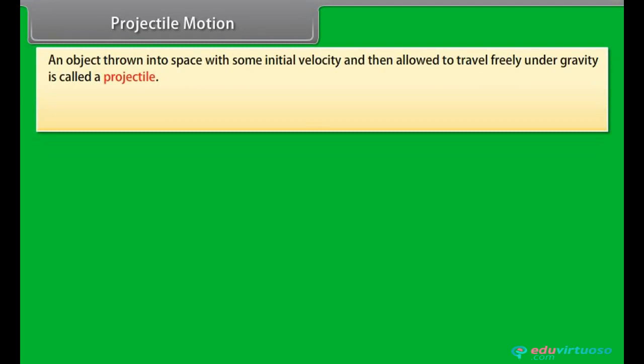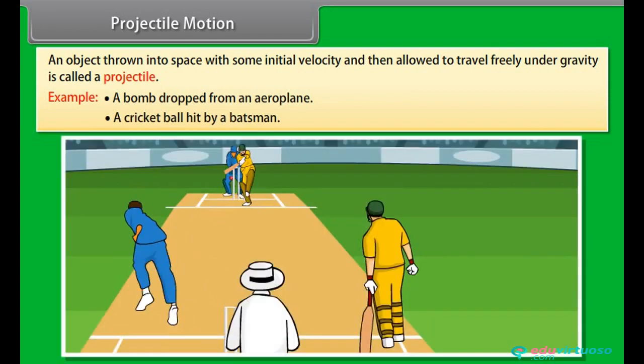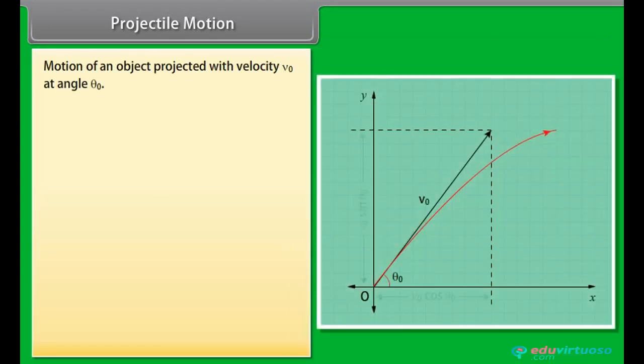Projectile motion. An object thrown into space with some initial velocity and then allowed to travel freely under gravity is called a projectile. For example, a bomb dropped from an aeroplane, a cricket ball hit by a batsman.